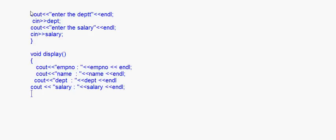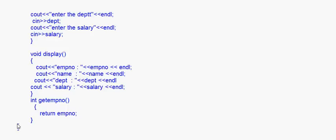Then we put one accessor function which is int getEMPNumber. This accessor function will return the EMP number. With that the class is closed and now we come to the main method in which we'll be writing the code for deleting a record.